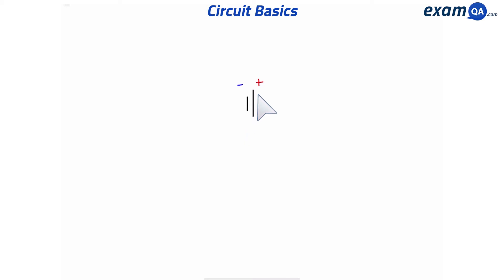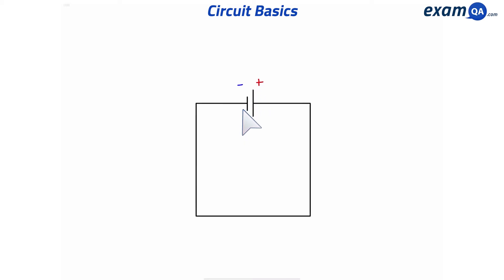The long side is the positive side and the short side is the negative side. The black line around it represents the metal wire that makes the circuit. In a circuit, we have electrons that flow.